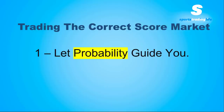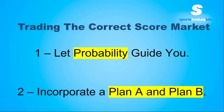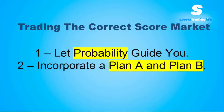Then we can look at the goals markets and see what the markets are forecasting with regards to over 1.5 and over 2.5. Most of the time it's going to be over 1.5, but the over 2.5 market can be very revealing. Once you've had a look at that you can decide which score lines you're going to cover - you might cover 2-0 and 2-1, and there may be 3-0 and 3-1, or possibly just 2-0, 2-1 and 1-0. Let probability guide you, and incorporate a Plan A and a Plan B.